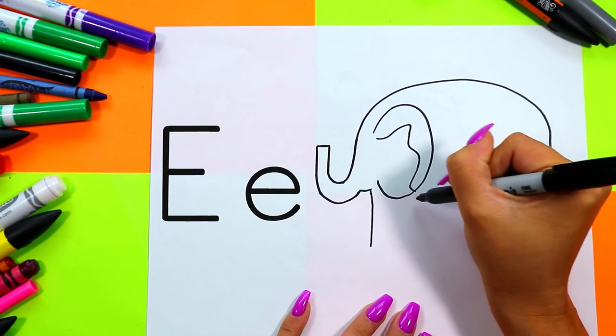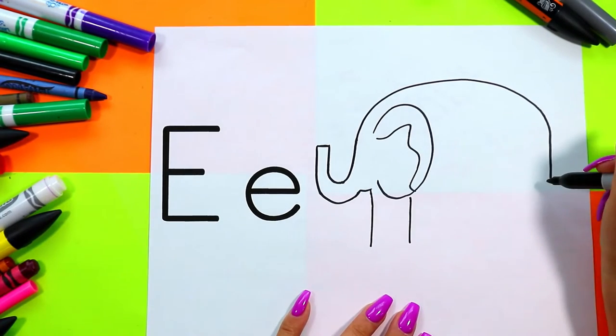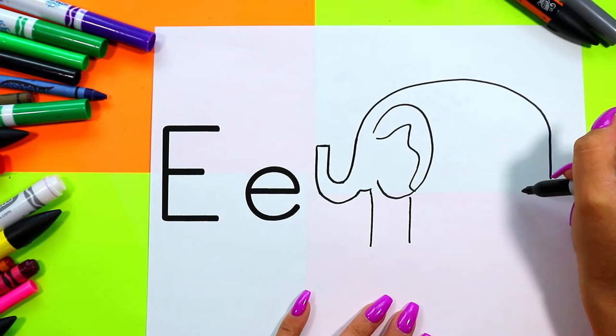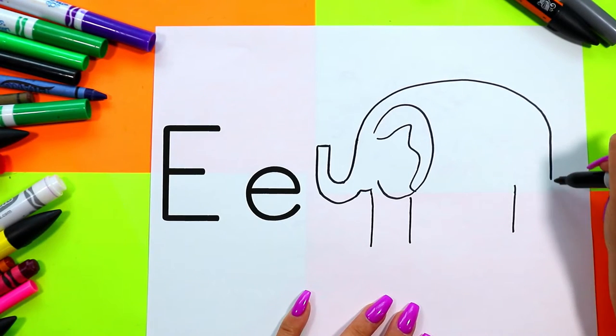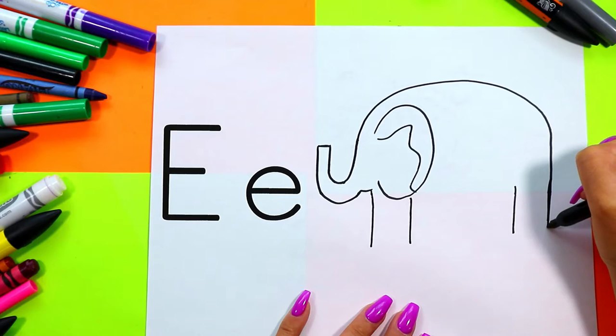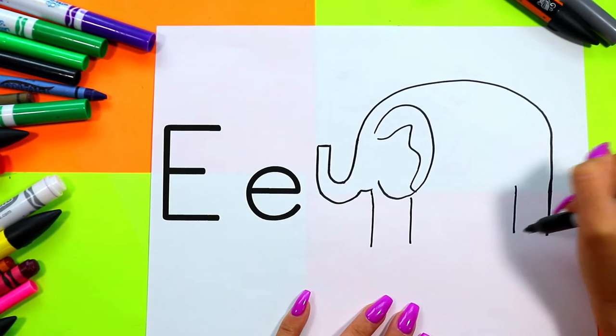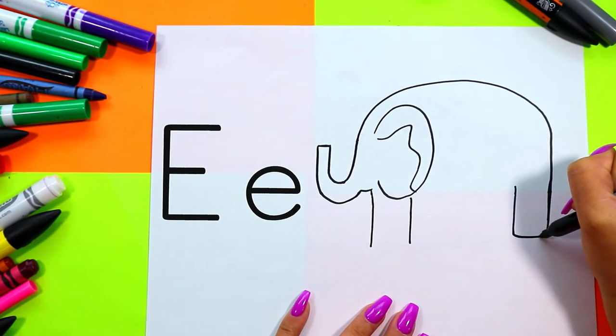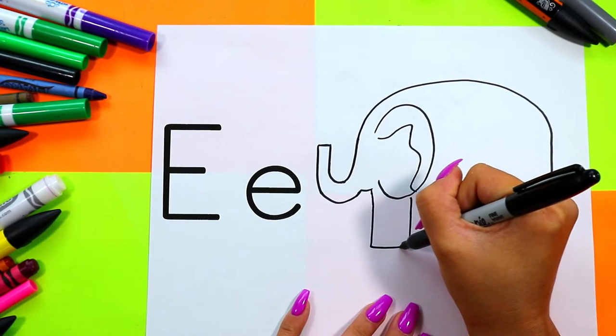Next, we're going to draw two lines down in the front for elephant's front leg and two lines down in the back for elephant's back leg. Connect the bottom with a straight line.